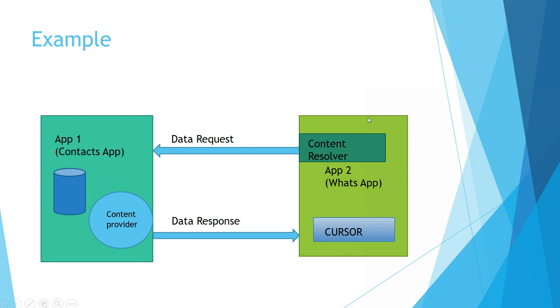one of your friends on WhatsApp. So using ContentResolver we request the data from the contacts app. The request is going from your application to application one. We will see more about ContentResolver in